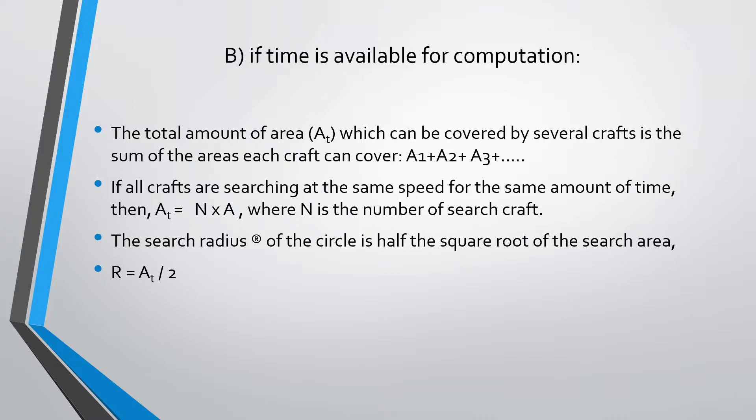So you calculate individual search areas A1, A2, A3 using the individual speed of the craft, and then add the search areas together to calculate the total amount of area.